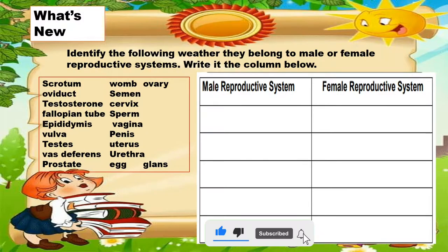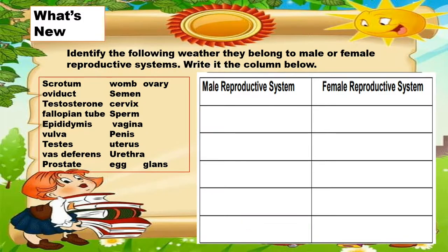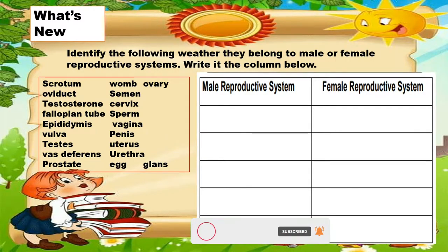Under 'What's New,' identify the following whether they belong to the male or female reproductive systems. Write it in the column below.